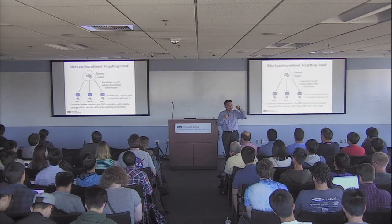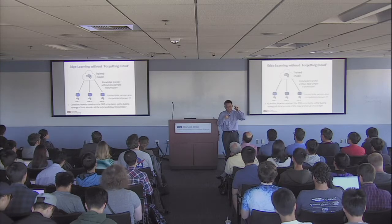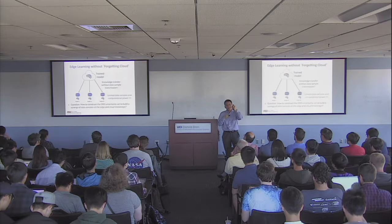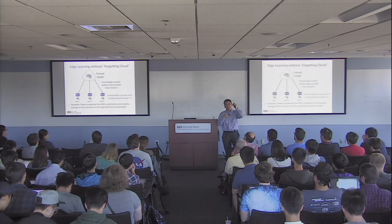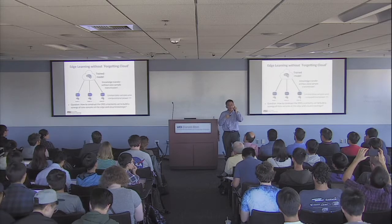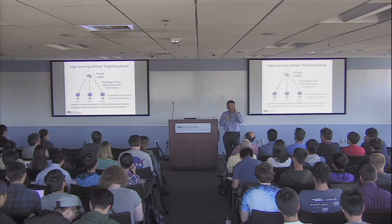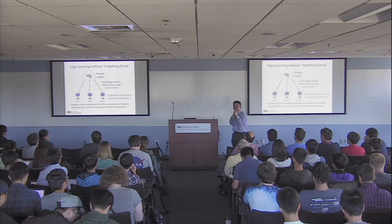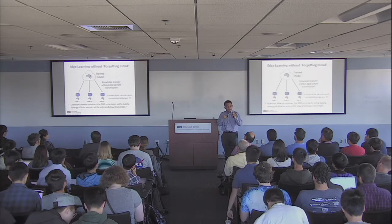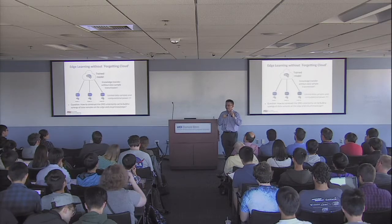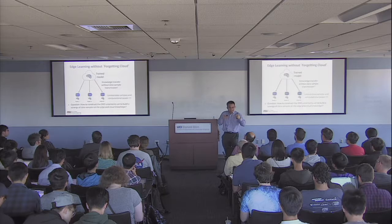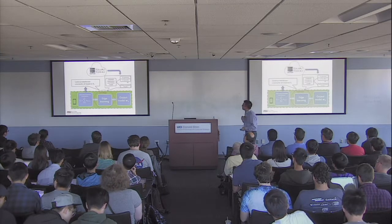We use the DRO approach for this. Intuitively, the knowledge from the cloud — say the cloud learns a model or distribution — is not 100% applicable. So when we transfer the knowledge, we construct an ambiguity set around it and transfer this ambiguity set to the edge. At the edge, we have limited data samples, and what we learn from local data alone is not sufficient. With this intuition, we can also build an ambiguity set around the local model, and then build a synergy between the two.